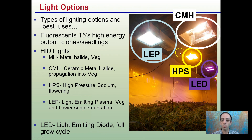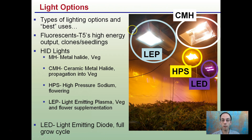High pressure sodium is used for flowering and it has that yellowish tint to it. LEP, or light emitting plasma, is used for veg or as flower supplementation, and it produces a very white, almost slightly bluish light.